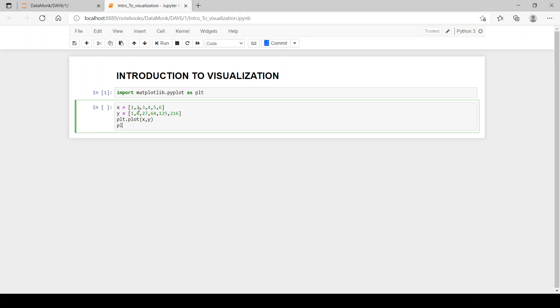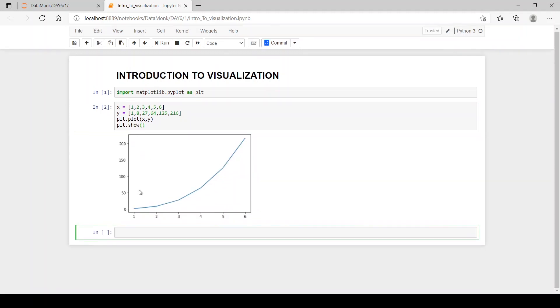And then we have to use the function plt.show to show our graph plotted. And you can see we have our line chart. But as you can see, we don't have any x label, we don't have any y label, we don't know what this plot is all about, and what this function is. We don't know anything.